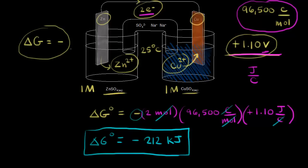We already know that when delta G is negative, that indicates a spontaneous reaction — so this is a spontaneous redox reaction. Notice that ΔG° and E° have opposite signs: we had a positive voltage and ended up with a negative ΔG, which is why there's a negative sign in our equation. A spontaneous reaction in a voltaic cell has a positive cell potential but a negative change in free energy.